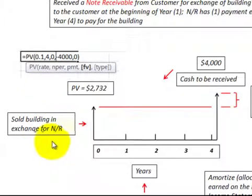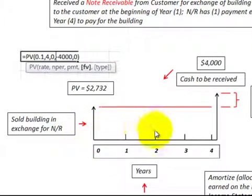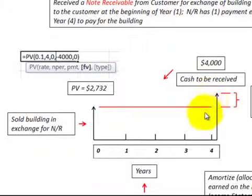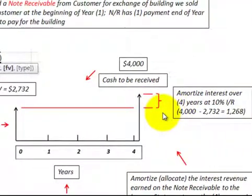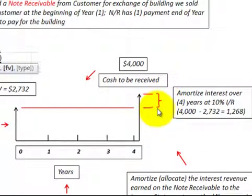We sold a building in exchange for a note receivable at the beginning of year one. Then, four years later, we received $4,000 cash for that building. So what we have to do is amortize the interest that we've earned over those four years. This is how we do that.